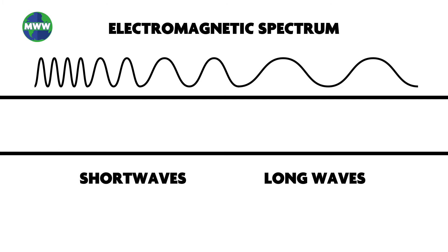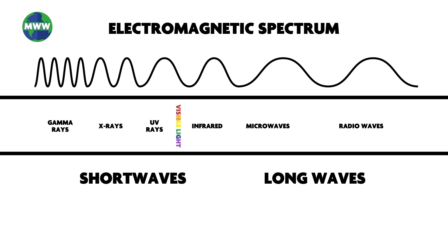Short wave radiation includes gamma rays, x-rays, ultraviolet rays, visible light, and some infrared. Long wave radiation includes far infrared, microwaves, and radio waves.